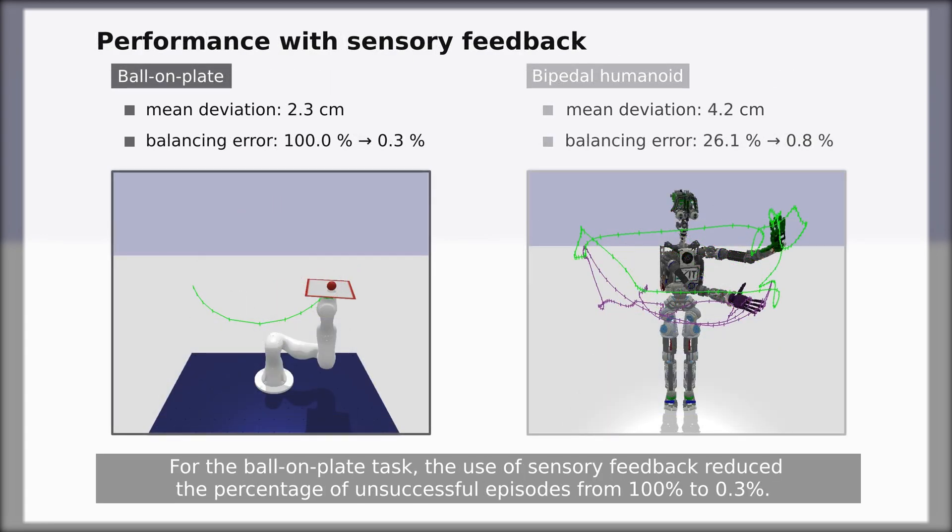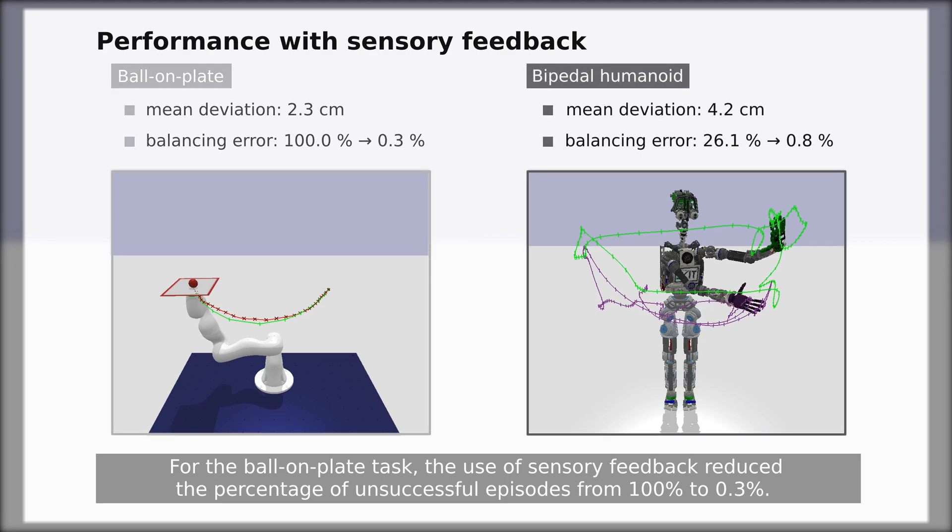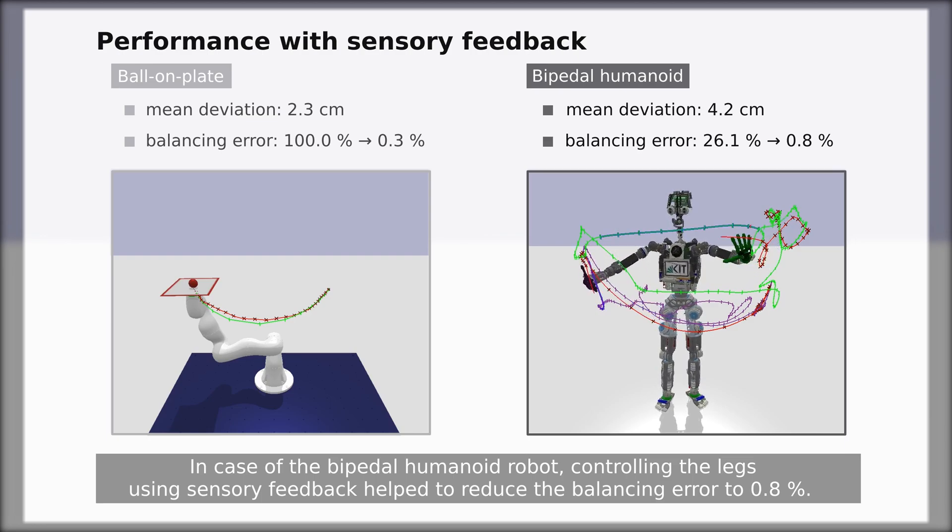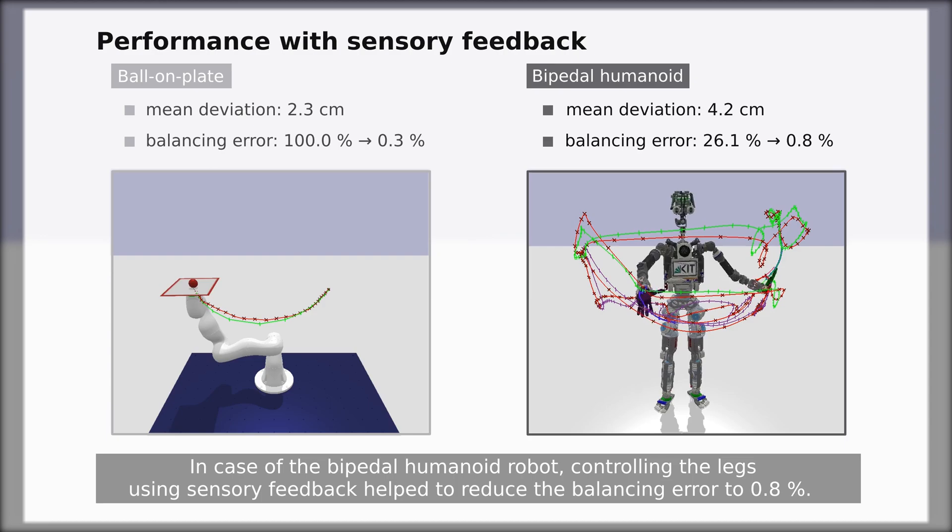For the ball-on-plate task, the use of sensory feedback reduced the percentage of unsuccessful episodes from 100% to 0.3%. In case of the bipedal humanoid robot, controlling the legs using sensory feedback helped to reduce the balancing error to 0.8%.